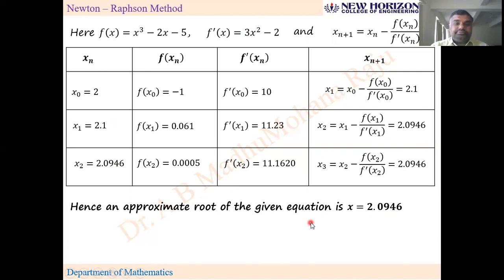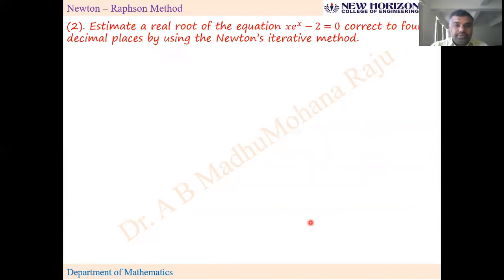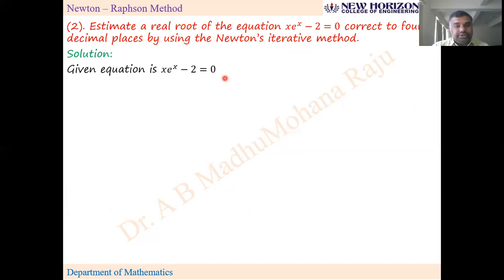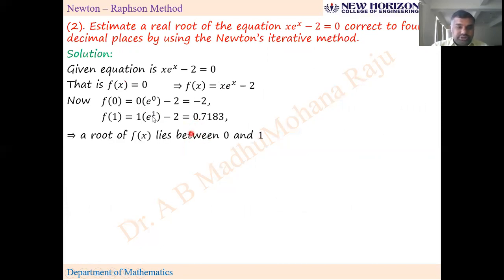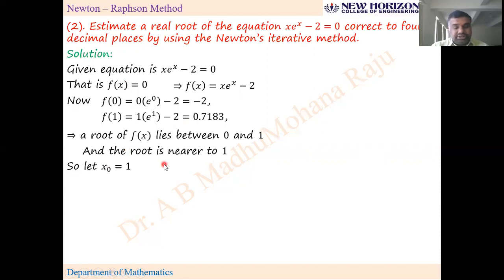Next problem: estimate a real root of the equation x·eˣ - 2 = 0, correct to four decimal places, using Newton's iterative method. List out f(x) and guess two values by trial and error. At x = 0, f = -2; at x = 1, f is positive. So the root lies between 0 and 1, nearer to 1. Take x₀ = 1.